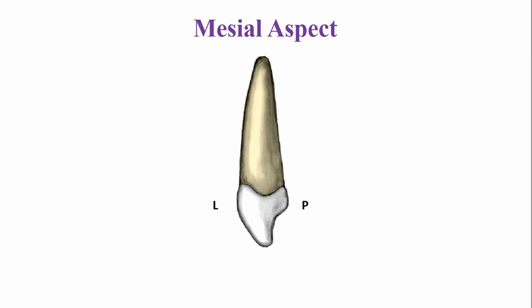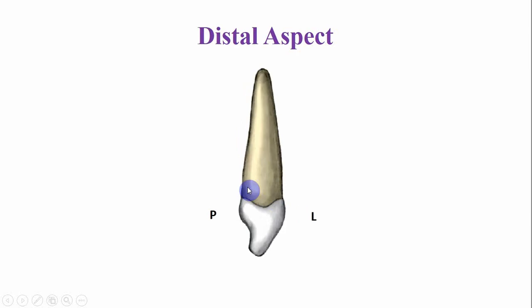The mesial aspect is similar to that of the deciduous central incisor. The curvature of the cervical line is more on the mesial side. On the distal side, the curvature of the cervical line is less, and the remaining features are the same as those of the maxillary central incisor.